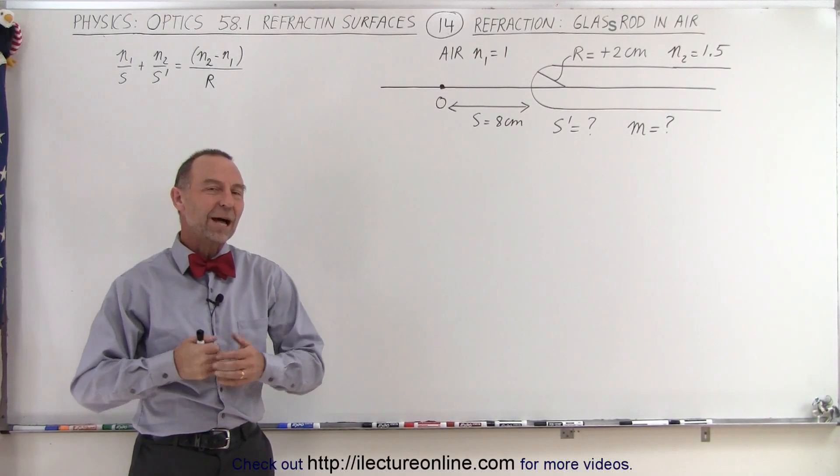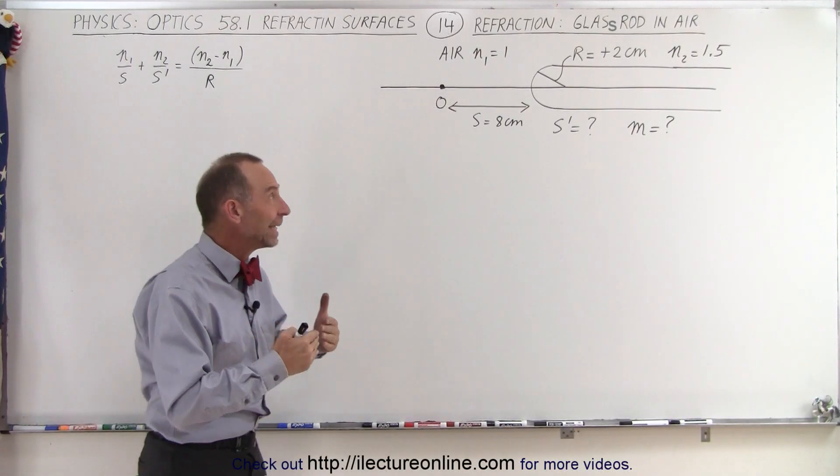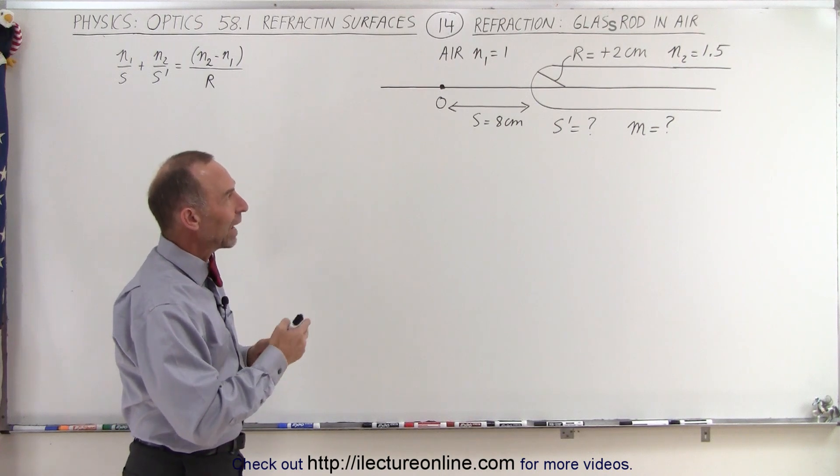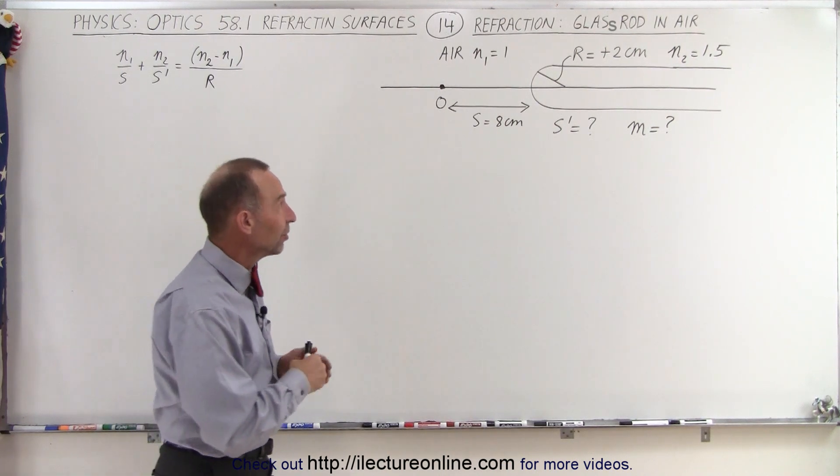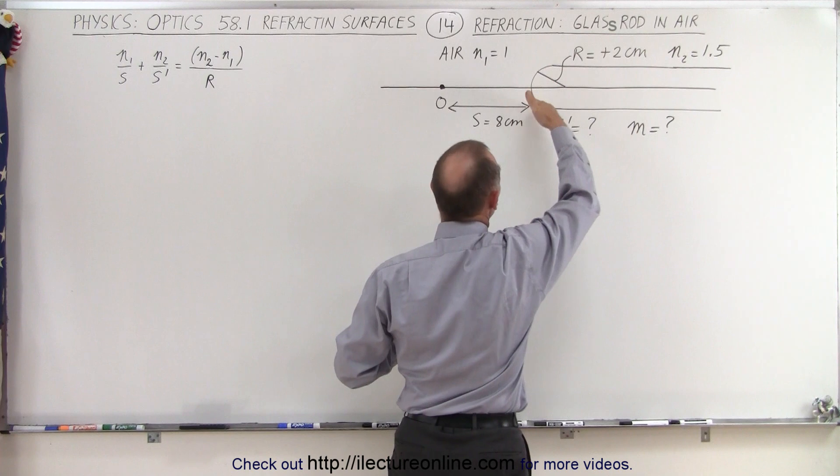Welcome to Electrum Online. Now we have a glass rod in air. We have a very small curvature radius. It is positive because the curve is to the left.